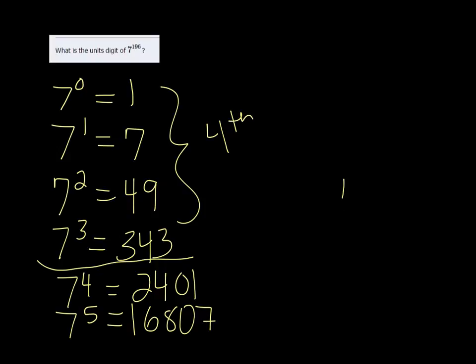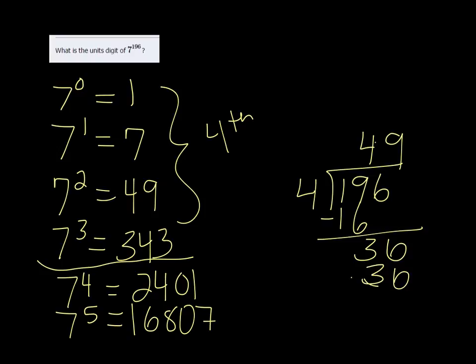So if I take the exponent here and divide it by 4, since it repeats every 4th one. 4 goes into 19 4 times. 4 times 4 is 16. And subtract that, we get a 3, bring down the 6, and it goes in 9 times. And with this we get a remainder of 0.